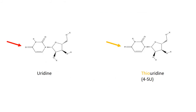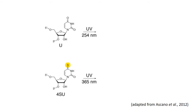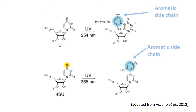So how does thiouridine work? When exposed to UV radiation, thiouridine undergoes a unique reaction. The thiouridine reacts with amino acids containing aromatic side chains and forms a covalent bond with these aromatic side chains. The exact mechanism of how the reaction occurs is not known. However, it is known that thiouridine only reacts to form covalent bonds at short distances, making it ideal for identifying where an RNA is in close contact with a protein.